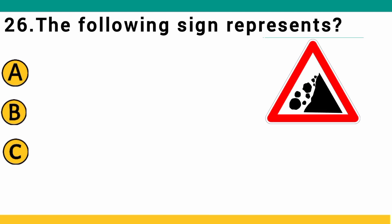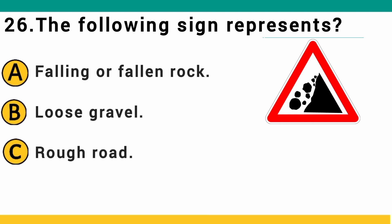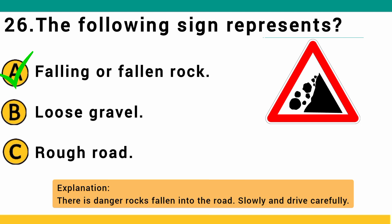The following sign represents: A) falling or fallen rock, B) loose gravel, or C) rough road. The correct answer is A: falling or fallen rock. There is a danger of rocks falling onto the road — slow down and drive carefully.